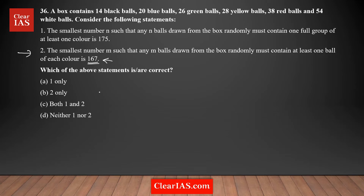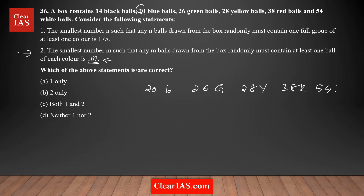Using the same worst case logic: out of all the balls, the black balls are fewest in number, so I select no black balls and all other balls instead — 20 blue, 26 green, 28 yellow, 38 red, 54 white. That gives a total of 166 balls selected without any black ball, so the condition is not yet satisfied.